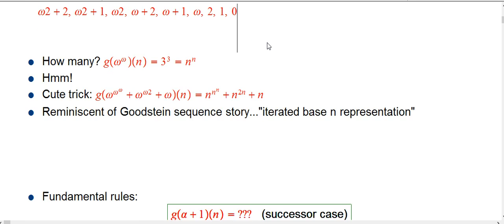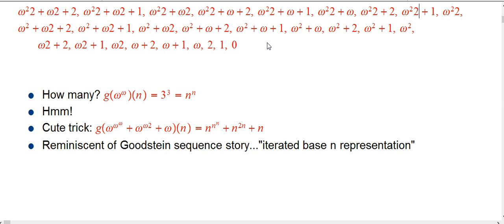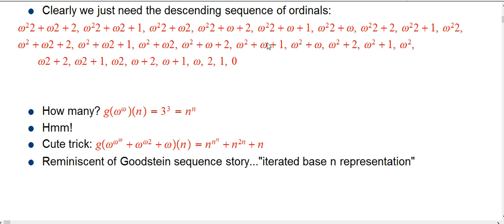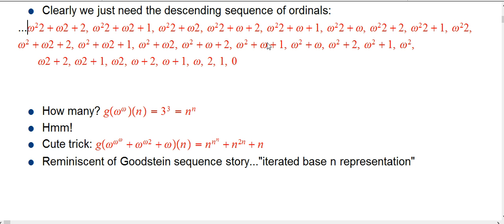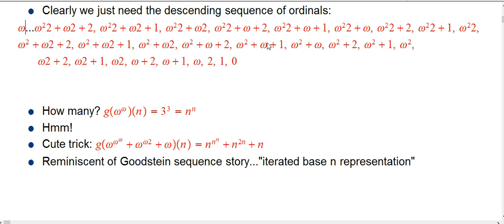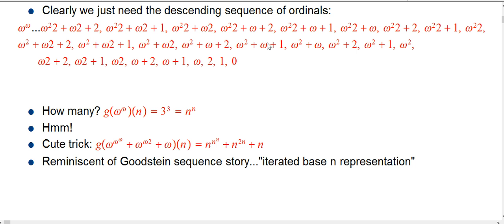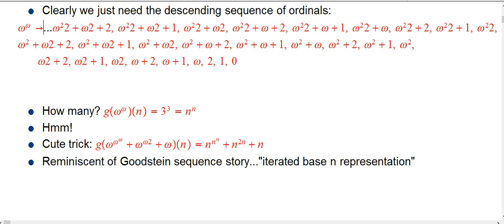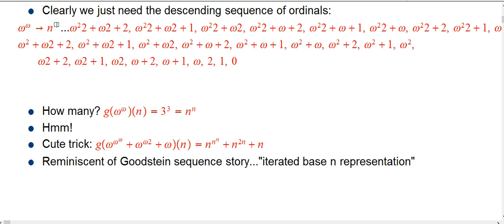If you look at this sequence — and in fact not only this — it all came from omega to the omega, and what we're seeing is we want to think of that as just turning into n to the n, specifically 3 to the 3 here.